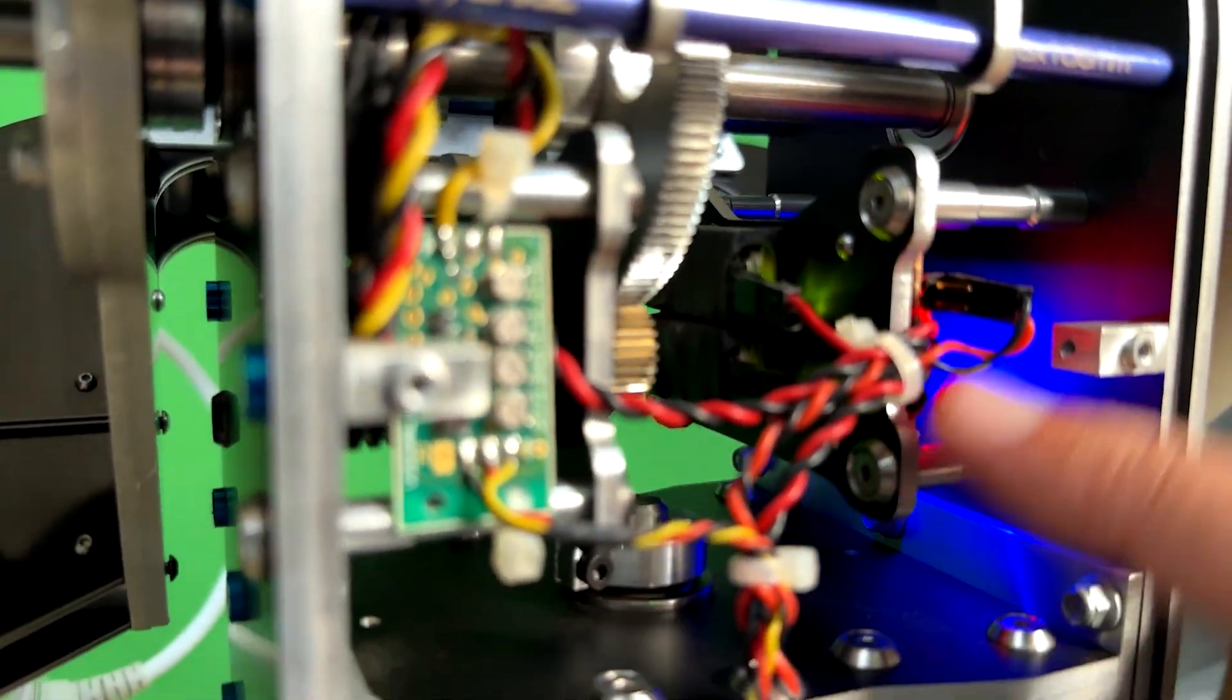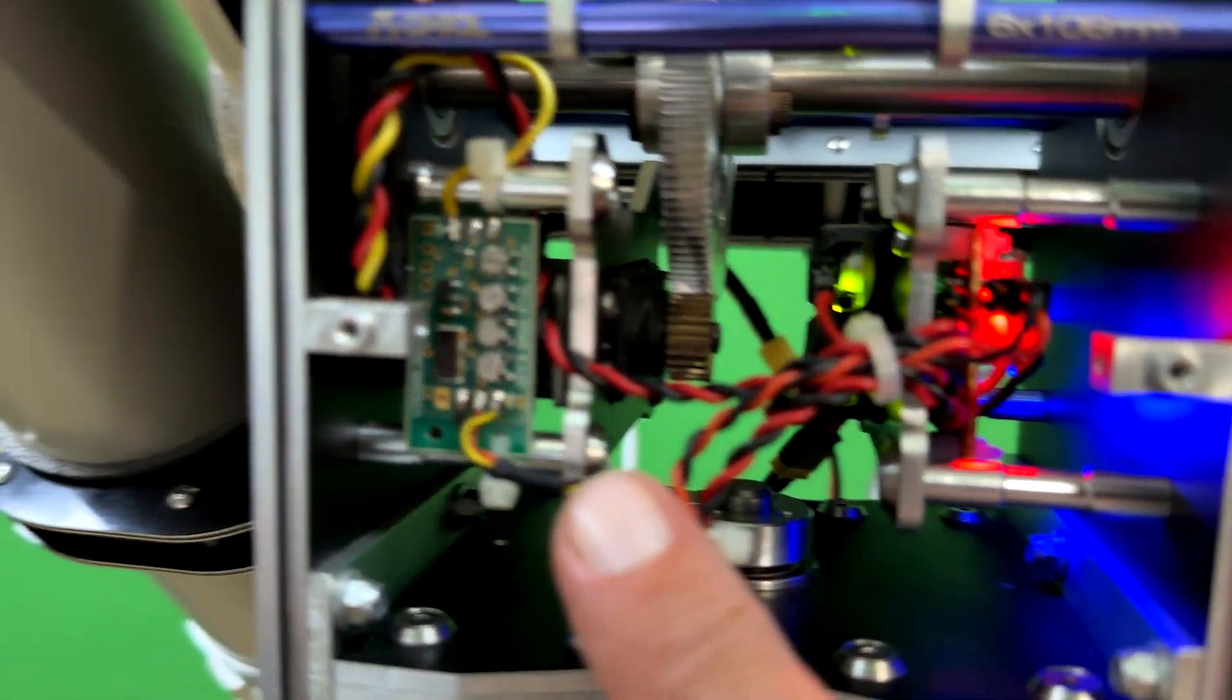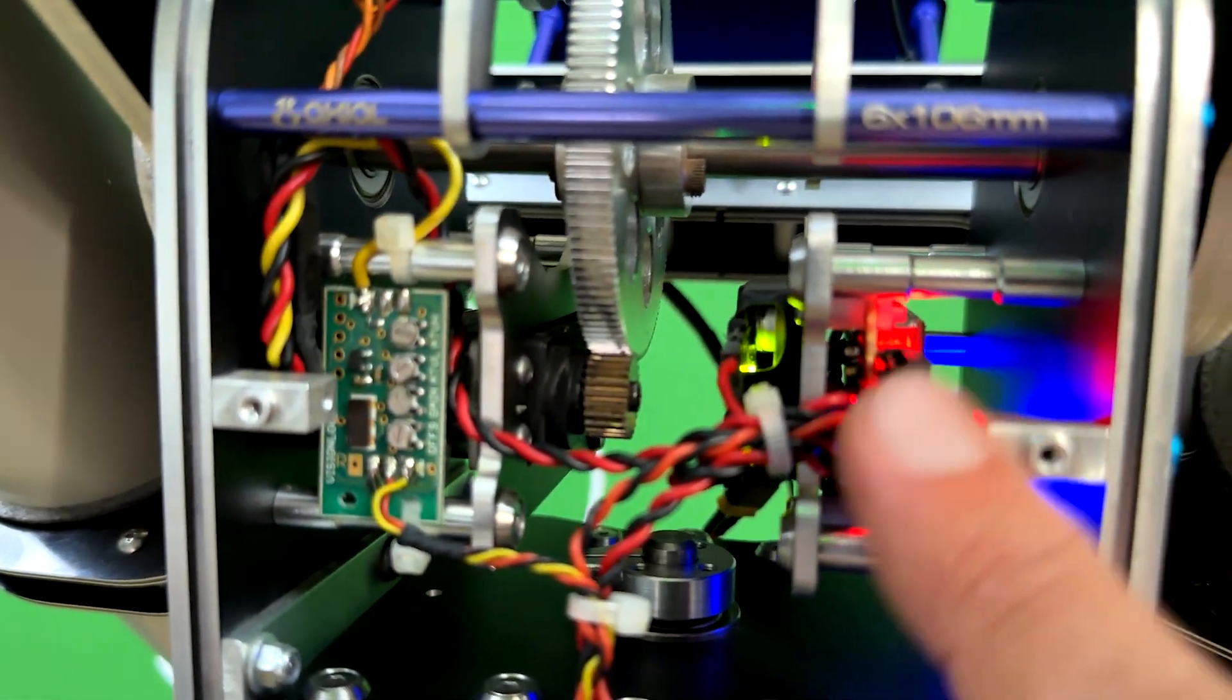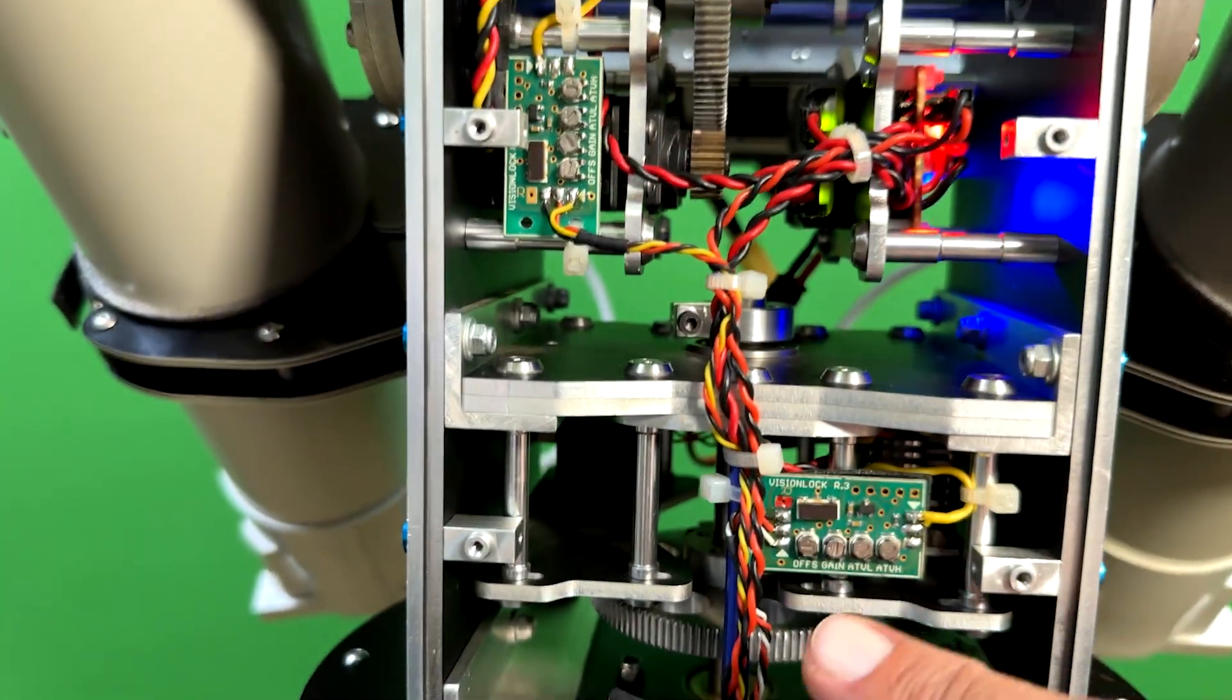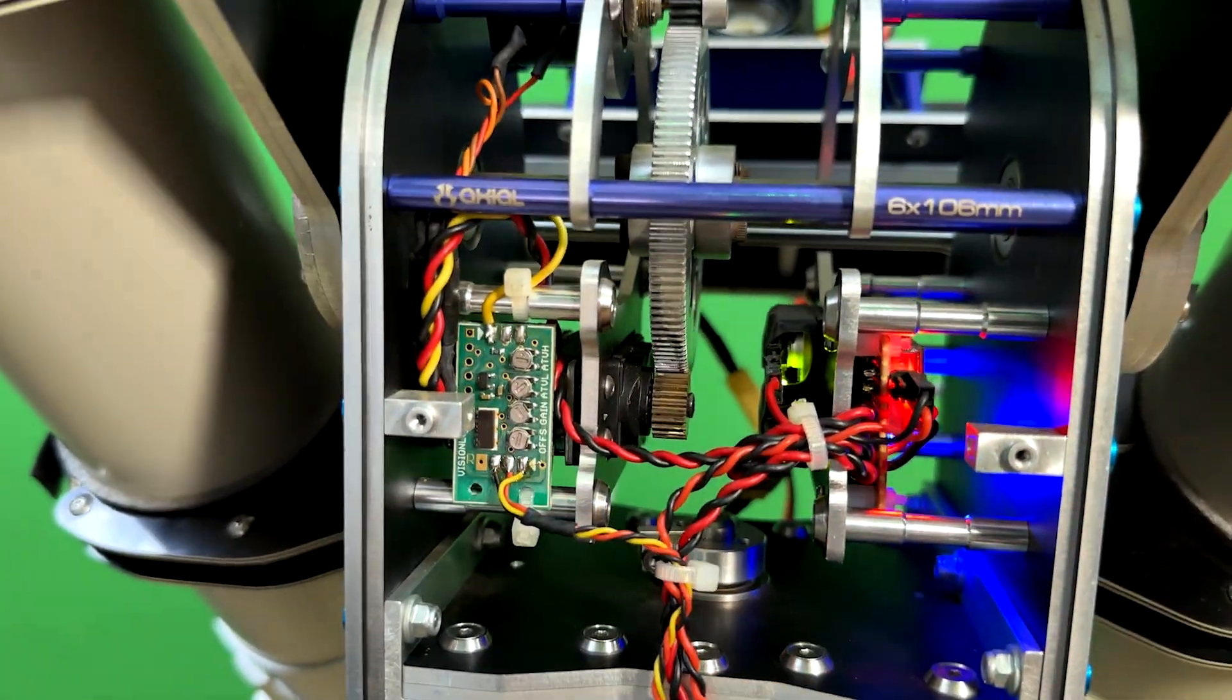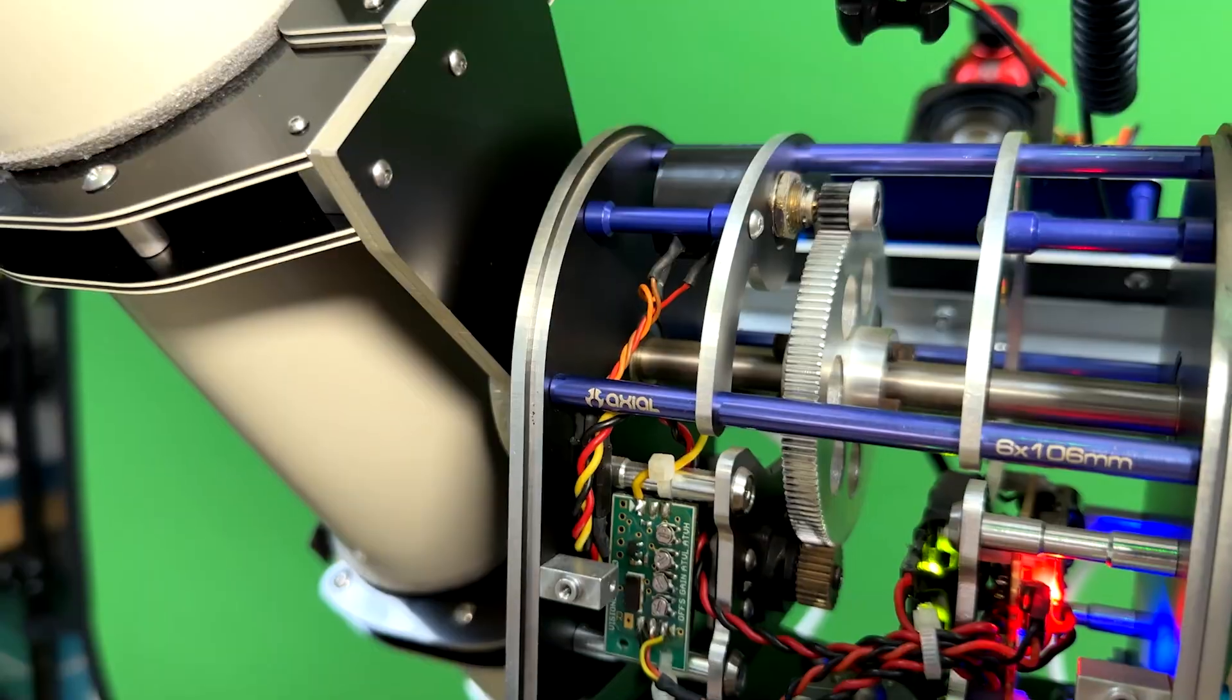This is the servo mount plates. In here I've got a power supply module with an independent 10-amp power source for each of the servos, which are running at 8.4 volts. You can see metal gears throughout.